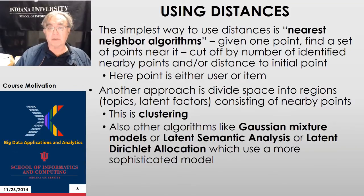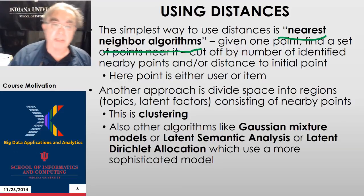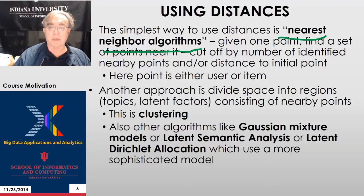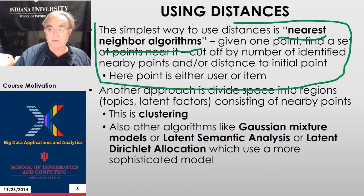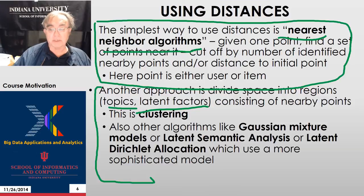We're looking for nearest neighbors in various ways. For clustering, we divide the space into subsets — subspaces — where each subspace has points that are near each other. In the case of k-nearest neighbors, we find the k neighbors nearest to a particular point. You find a fixed number — like three or ten — of items near another item, or users near another user. The other approach is to divide the space into regions, called latent factors or topics in information retrieval. That's clustering, and it consists of points that are near each other.